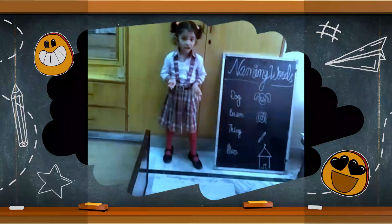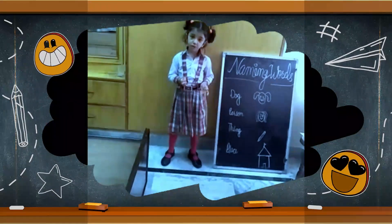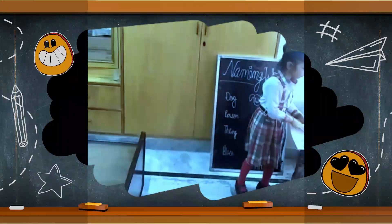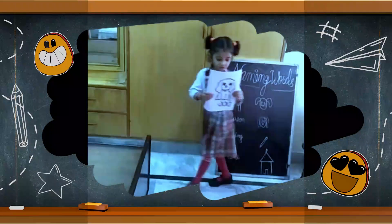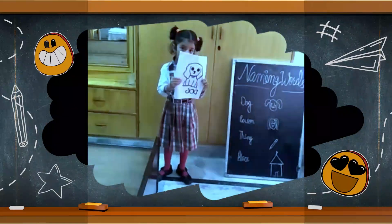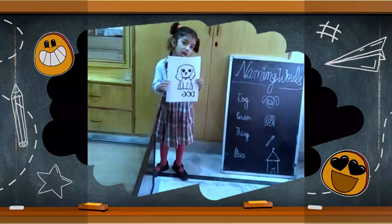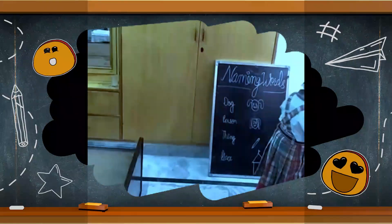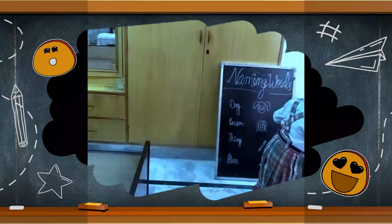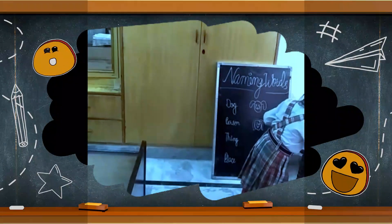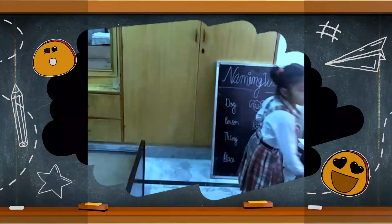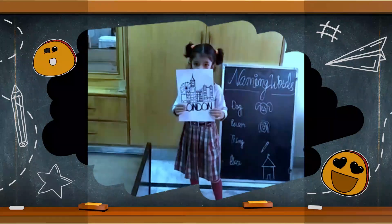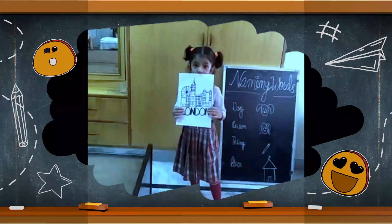I will show you a picture. What is this? This is a dog. This is an animal. What is this? This is a place.